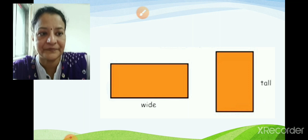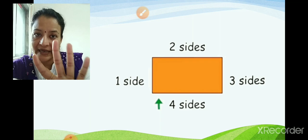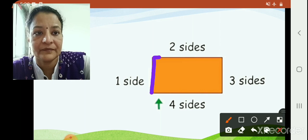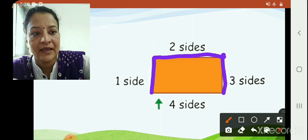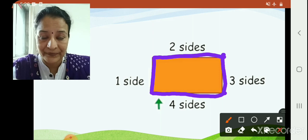A rectangle has four sides. Hold up your fingers like this — four sides. Now, what does a side mean children? Look here — this is side one, this is two, three, and four. Four sides. So, understood the meaning of a side?